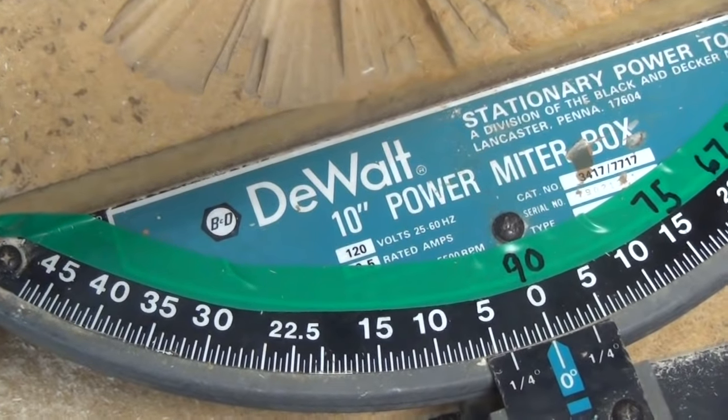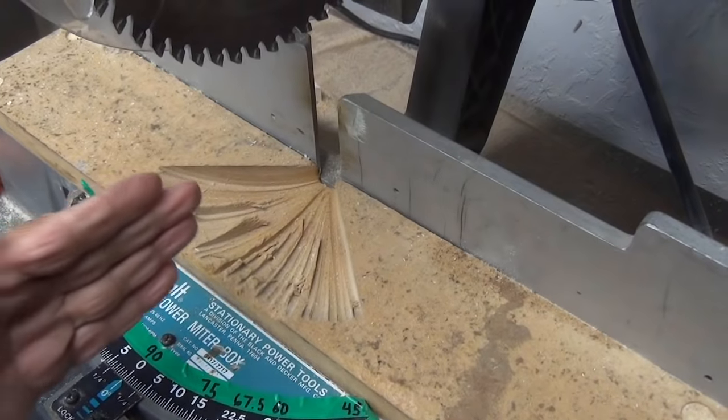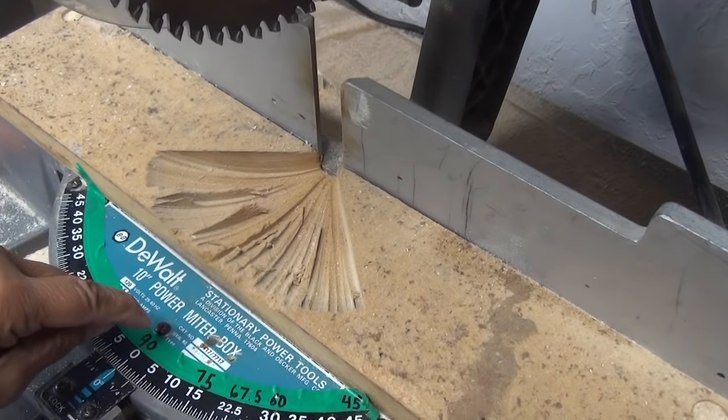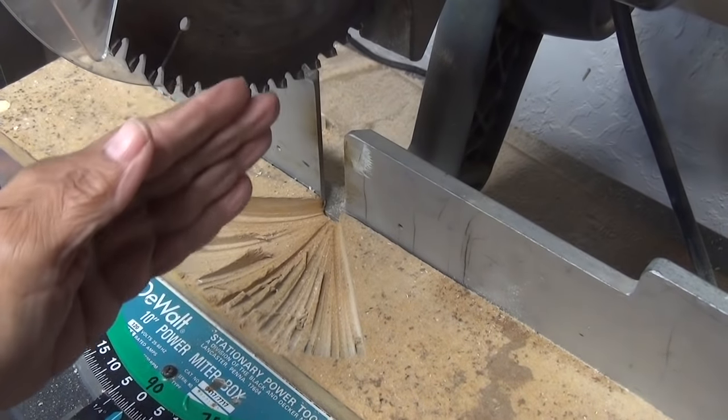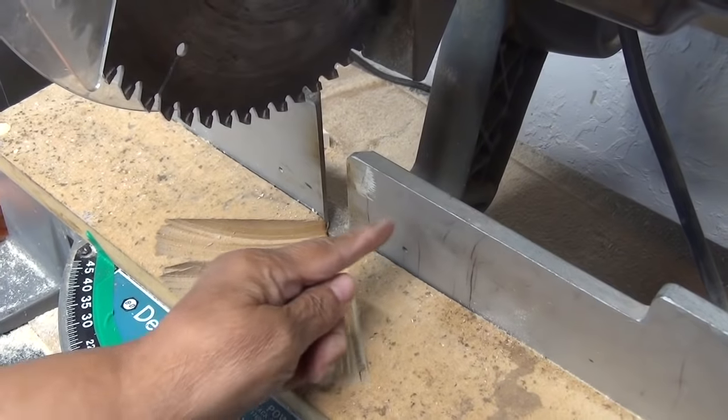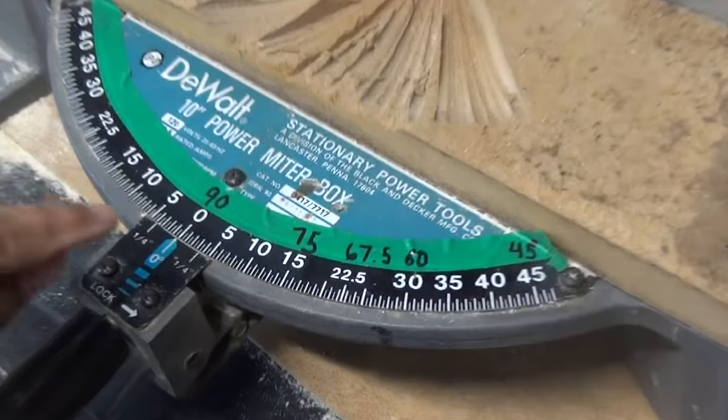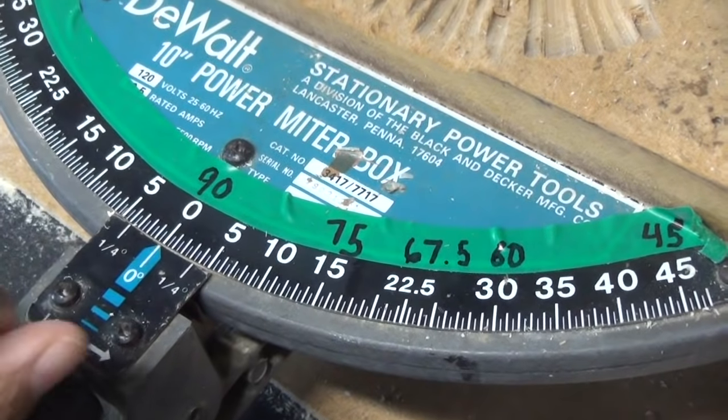And that's very important. So what you have to remember is when the saw is set at zero, the blade is 90 degrees to the fence. That's the fence. It's at a 90-degree angle. But your saw says it's set at zero.